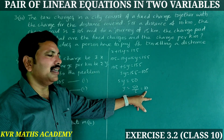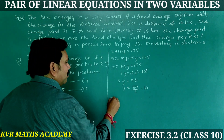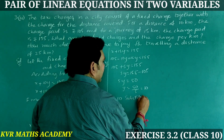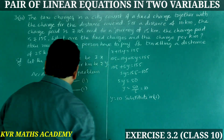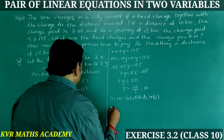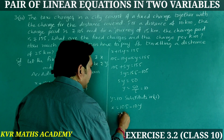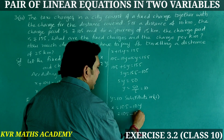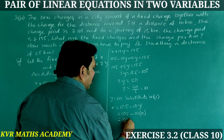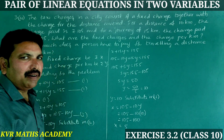Charge per kilometer is Rs. 10. Now find the fixed charge. Substitute Y = 10 into equation 3: X = 105 minus 10 × 10 = 105 minus 100 = 5. So X = 5. Fixed charge is Rs. 5.